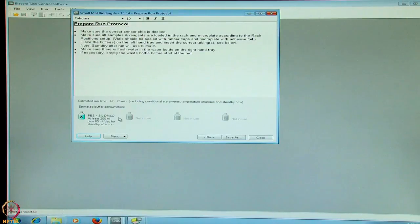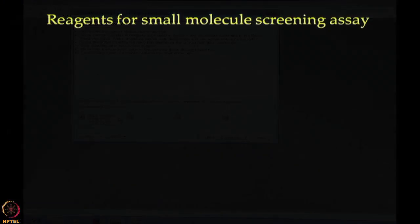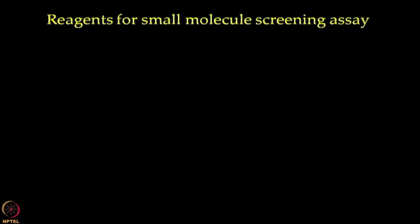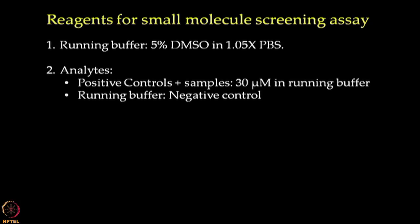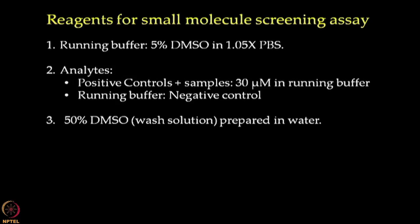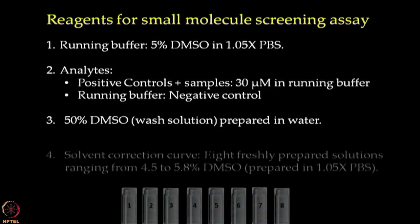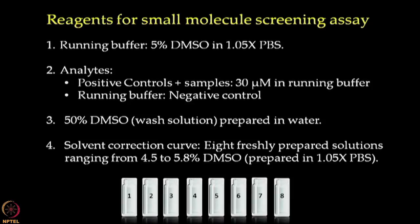The immobilization level should be high. The machine should be cleaned or primed at least one day prior. The instrument should be equilibrated with the running buffer for at least 6 hours before the start of the experiment. As per the volumes listed in the table, the following samples and reagents will be prepared: running buffer will be 5% DMSO in 1.05x PBS; positive controls and samples at 30 micromolar concentration in running buffer; running buffer as negative control; a wash solution of 50% DMSO in water; and 8 freshly prepared DMSO solutions ranging from 4.5% to 5.8% DMSO for solvent correction.